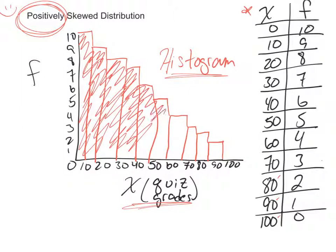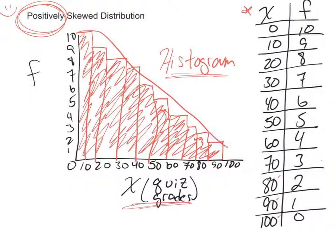So this is a positively skewed distribution because when you draw the line on the top of the graph and drag it down, it's pointing towards the positive end of the number line. A number line starts with zero in the middle. Numbers going this way are positive numbers, numbers going this way are negative numbers.